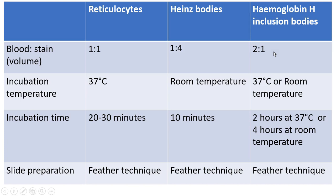In the hemoglobin H inclusion body staining procedure, we add 2 volumes of blood to 1 volume of stain.